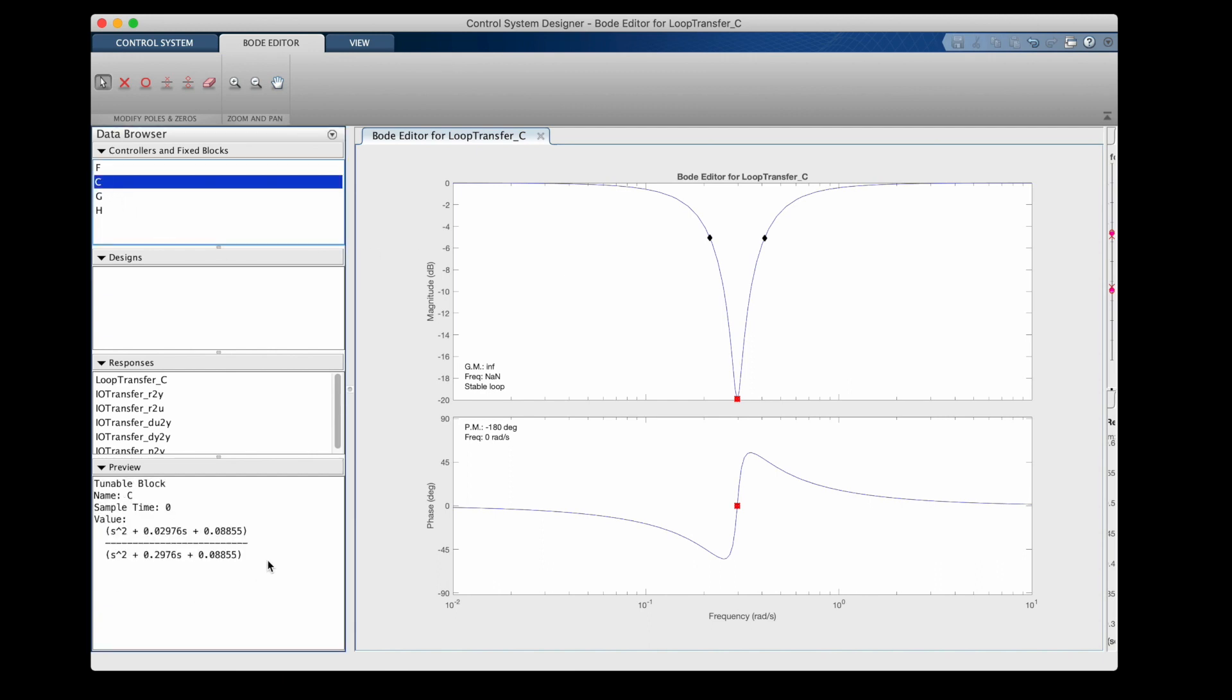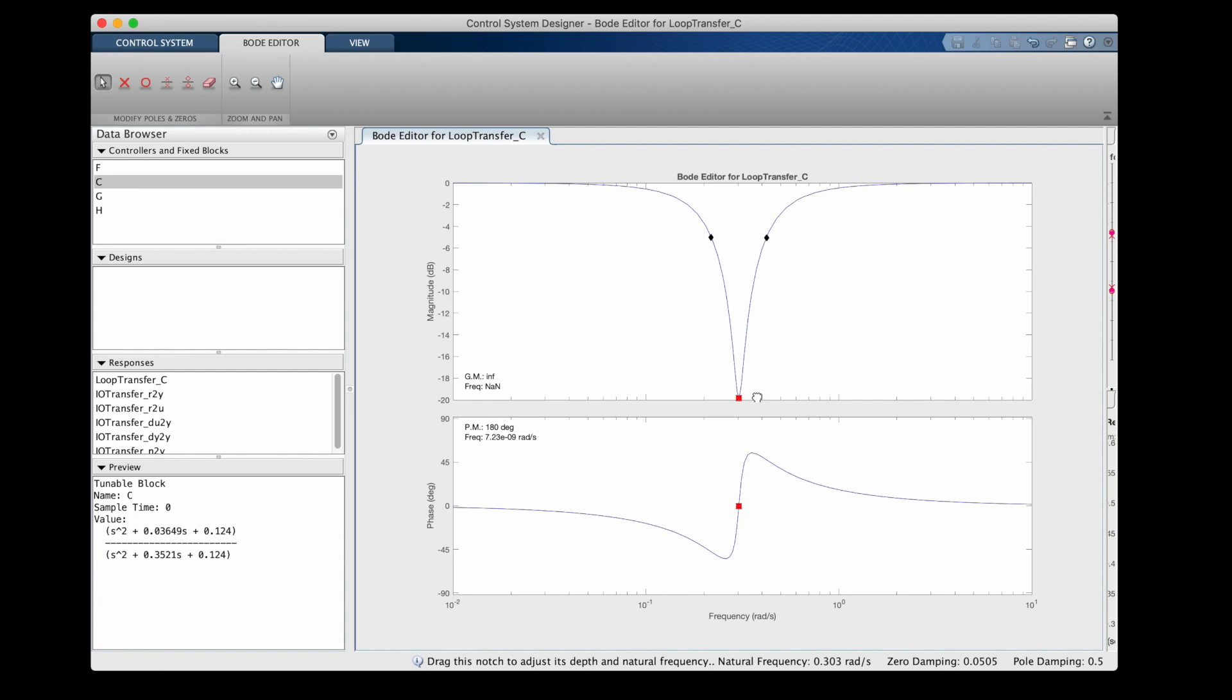You can see that in the lower left, the value of the compensator C is the second order transfer function for this notch. And by grabbing the red marker, I can move the notch around and change the depth. Basically, I'm adjusting the natural frequency and the damping ratio by doing this.